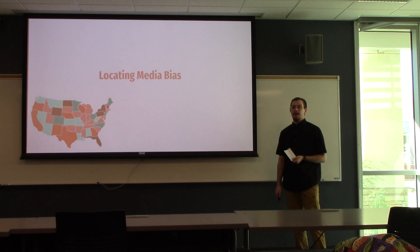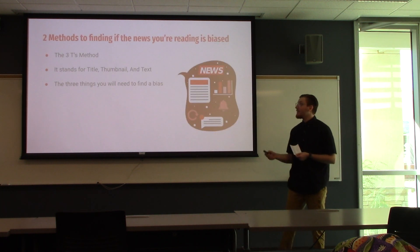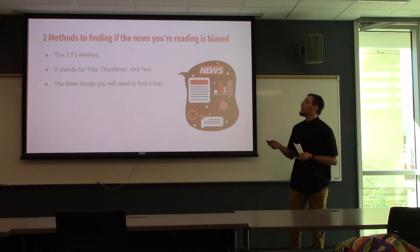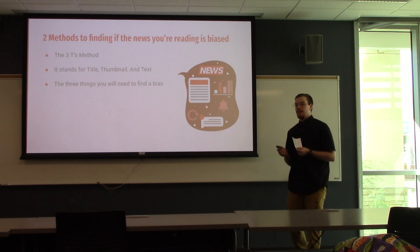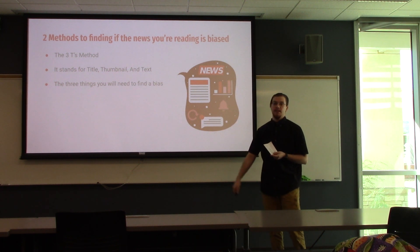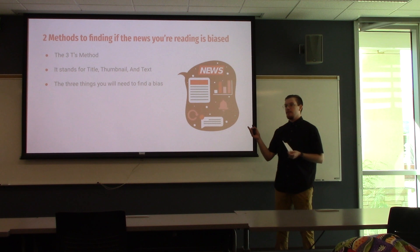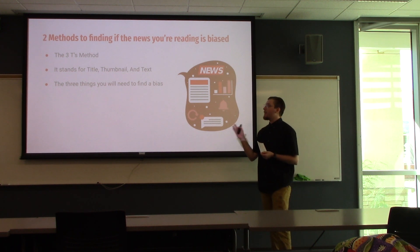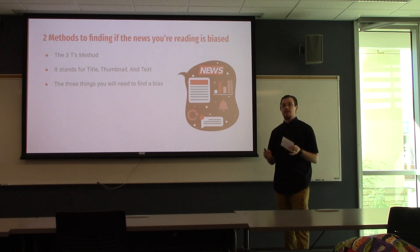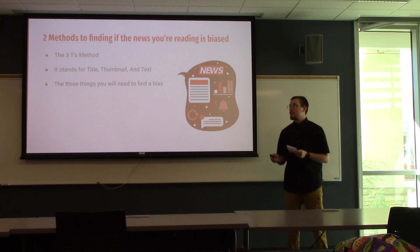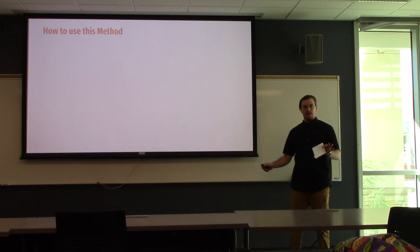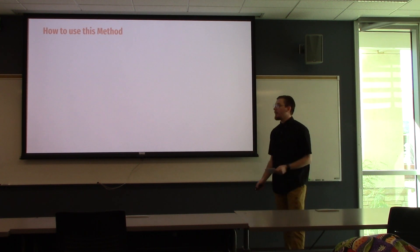Locating media bias — that graph means nothing without two methods of finding whether the news you're reading is biased. The first is the Three T's method: read the title, the text, and the thumbnail — the three things you can look at to find a bias. Here are some examples.